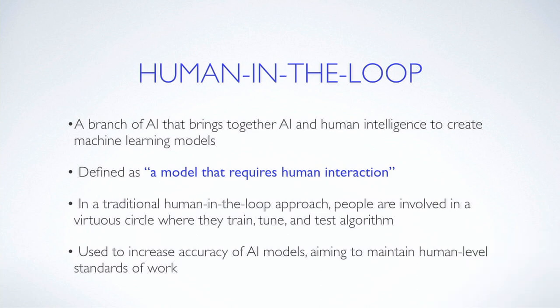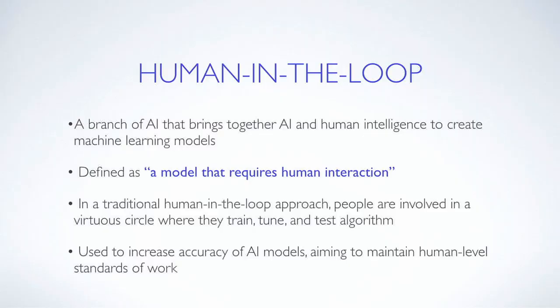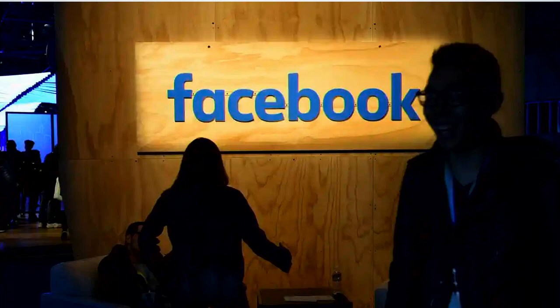Now I'd like to talk about the term 'human in the loop.' Essentially this is an AI model that requires human interaction — it goes hand in hand with human-centered AI. It means that humans are involved in the training, testing, and tuning process of building a machine learning model. Humans can label training data, learn which features to recognize, verify the accuracy of a model, and provide feedback when it makes an error. Crucially, it ensures humans are part of a continuous feedback loop with the model, aiming to achieve what neither a human nor a machine can achieve on its own.